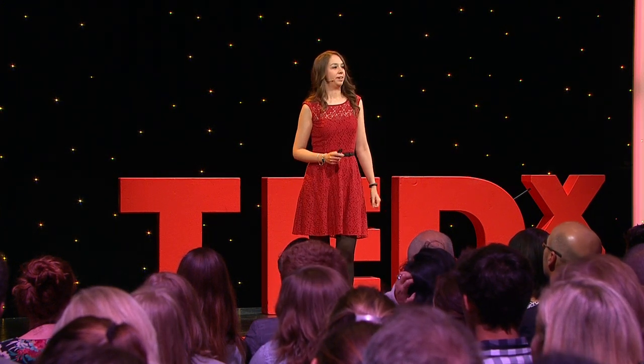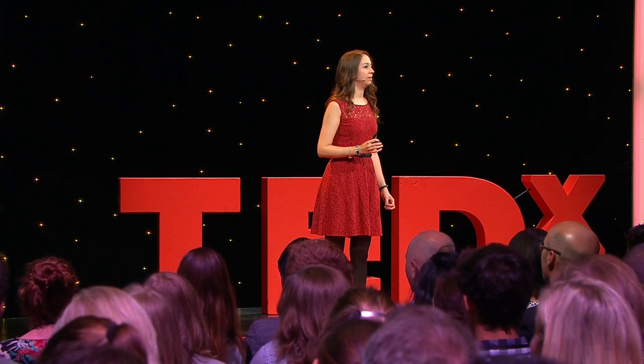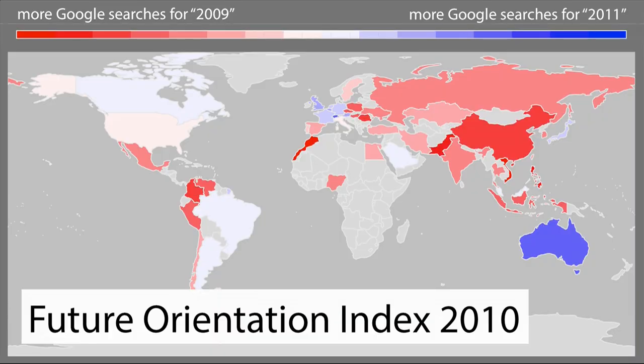So we took data from 2010, and we looked at all countries in the world where there were over 5 million internet users, and we measured how often did they look for the upcoming year, 2011, and how often did they look for the previous year, 2009. On this map, countries who looked more for 2011 are shown in blue, and countries who looked more for 2009, the previous year, are shown in red.